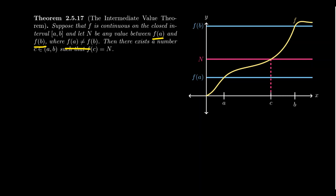And let N be any value that sits in between f(a) and f(b), assuming f(a) and f(b) are not the same y-coordinate. This is actually where it gets the name Intermediate Value Theorem. Because if N is between f(a) and f(b), then it's an intermediate value.